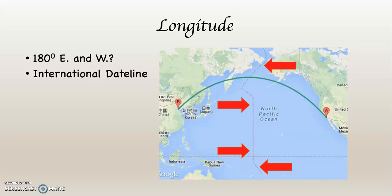At 180 degrees east and west is the international date line. If you look at this map, you can see the red arrows are pointing at the international date line. Out in the middle of the Pacific, it follows exactly along 180 degrees east or west, halfway around the world from the prime meridian.